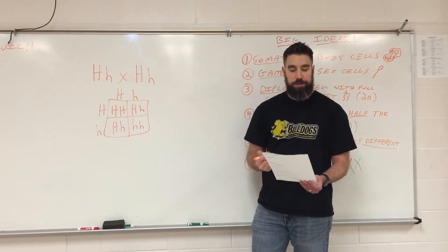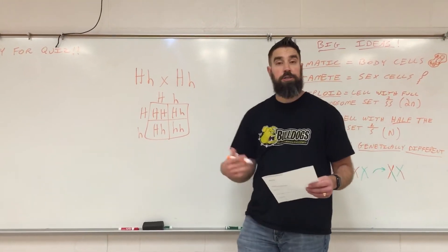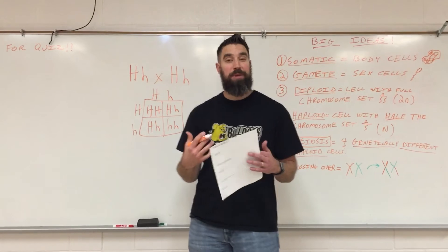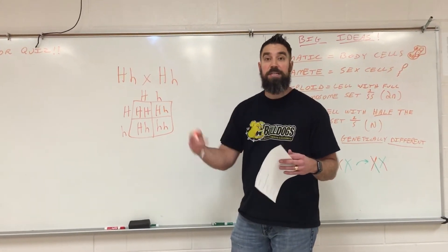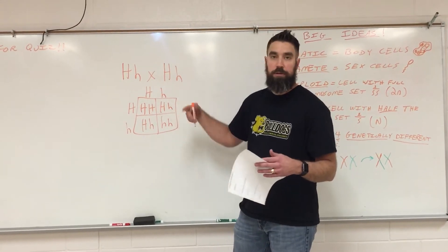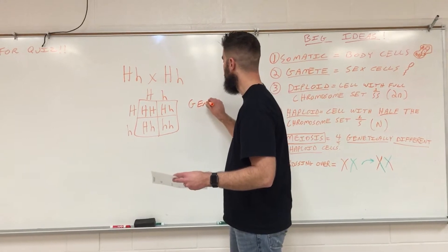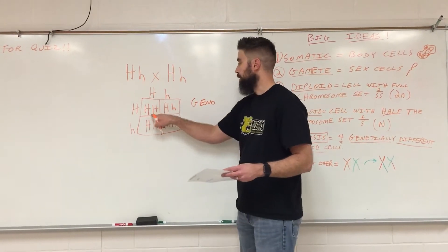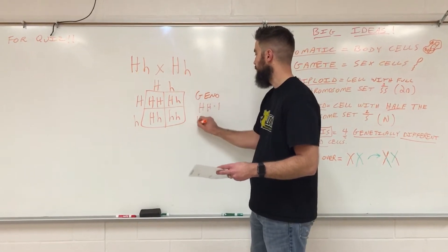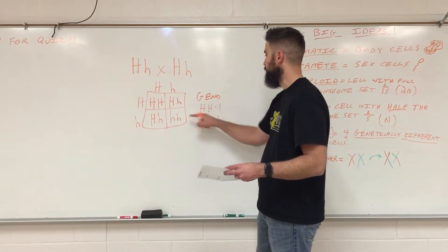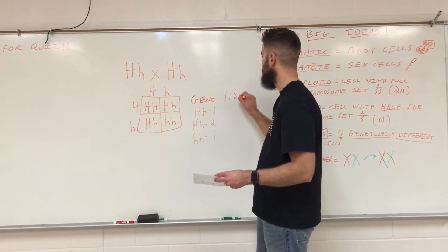Now it wants you to do two different ratios: a genotypic ratio and a phenotypic ratio. Remember, if it's talking genotype, that's the actual allele combination — those are the actual letters. So the genotypic ratio — we're looking at the letters. How many big H, big H's do we have? We have one. Big H, little h — we have two. And then little h, little h — we have one. So your ratio would be one to two to one.